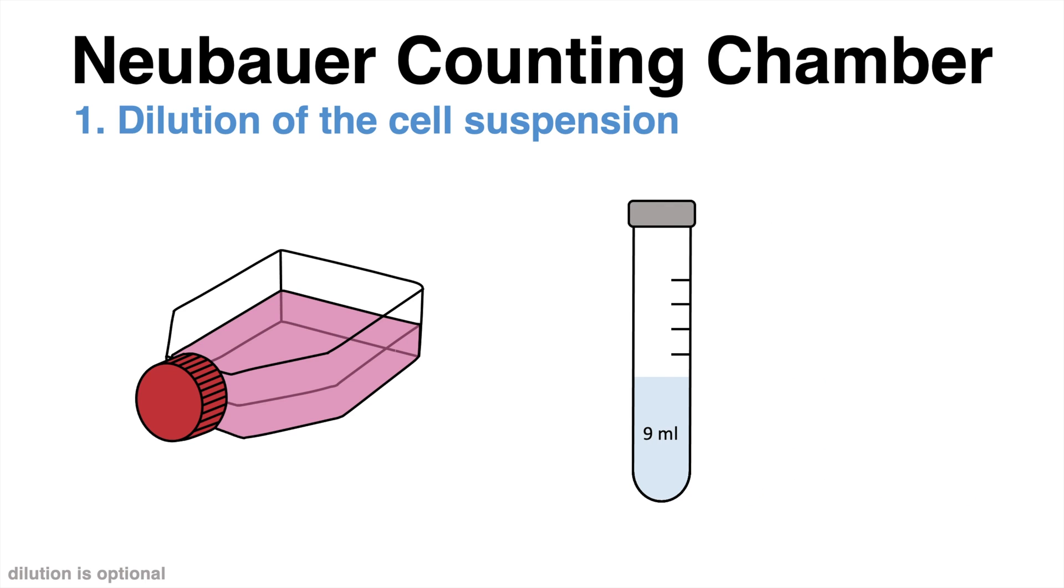The next step is to dilute the cells. This is optional, but may help especially when working with a high number of cells. One milliliter of the cell suspension is for example diluted in 9 ml of water or medium, making a total volume of 10 ml.